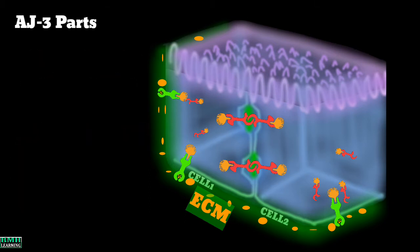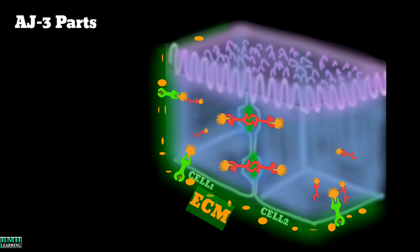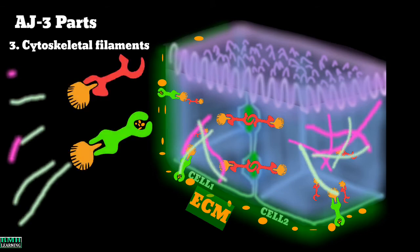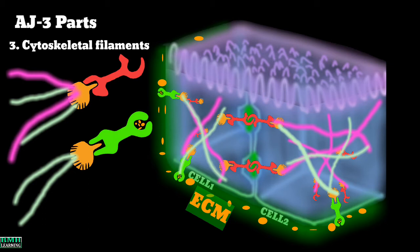Then we have the third portion of these junctions, the cytoskeleton filaments themselves. First, the cytoskeleton filaments are attached to the adapter proteins.